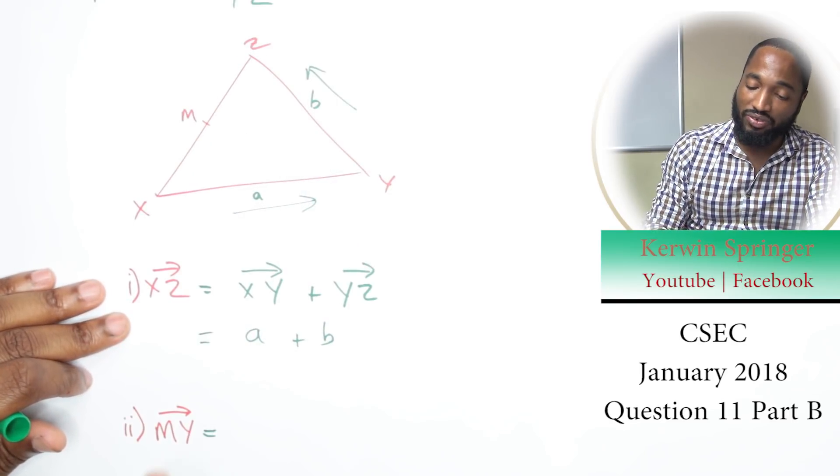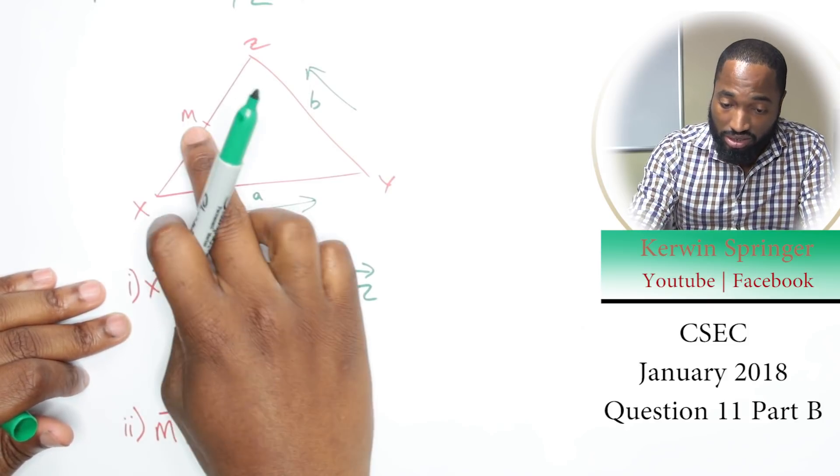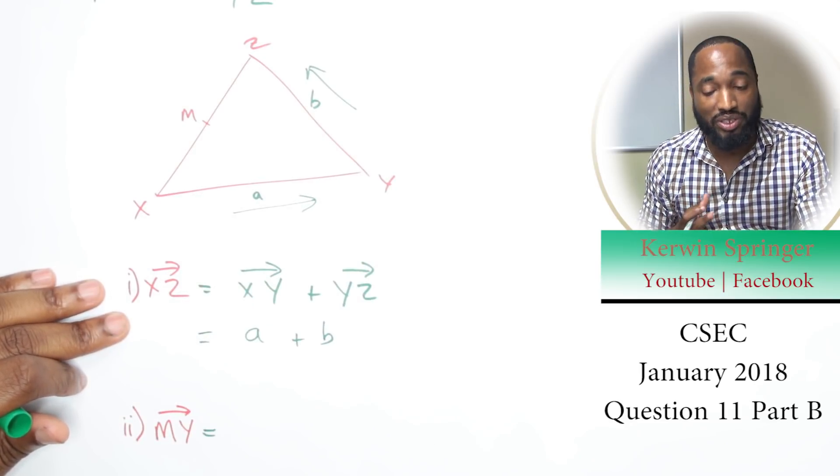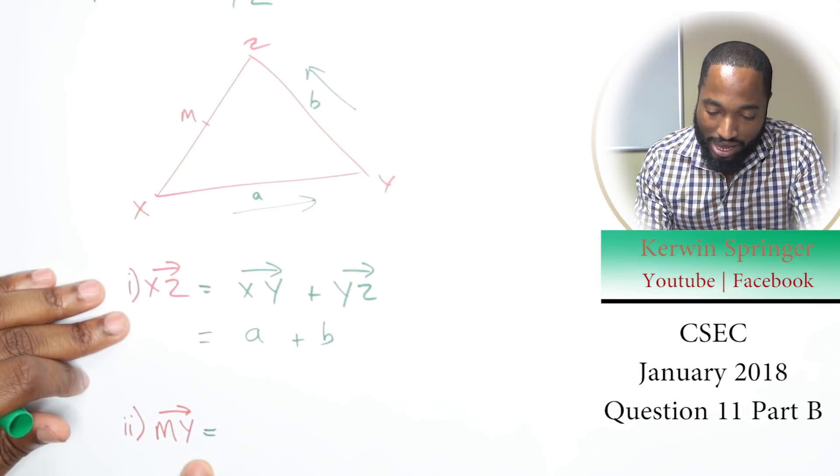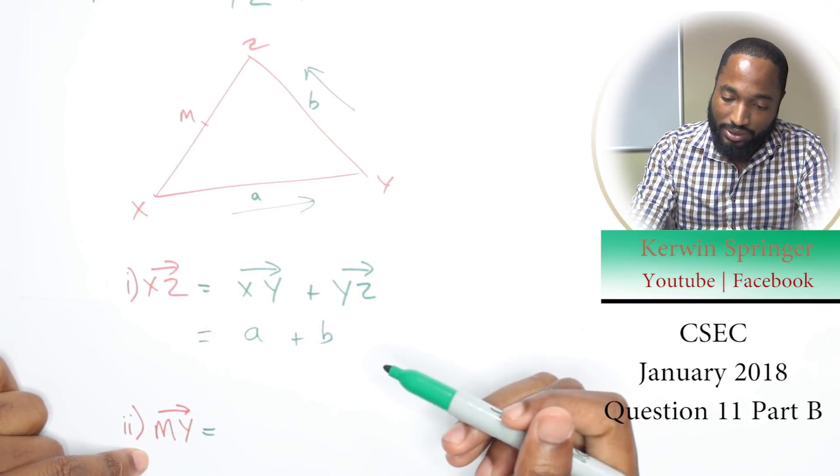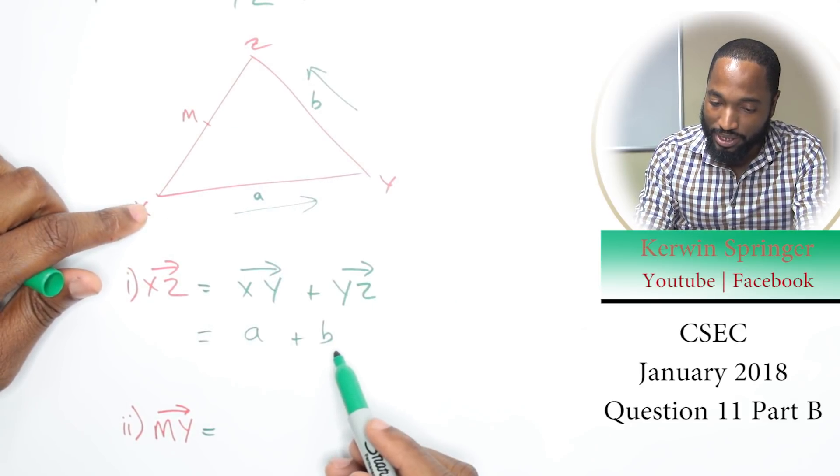The next thing we were asked to do was find MY—vector M to Y. Because we have a diagram, we have something to reference. M is the midpoint, and the midpoint of something is halfway through. So if I want to go from X to Z, from M to Z is actually half of this.